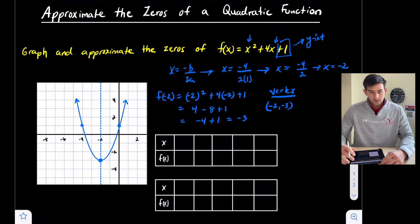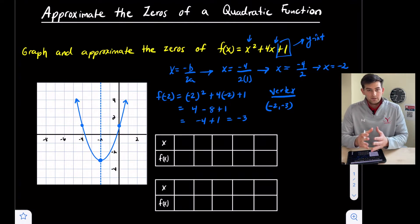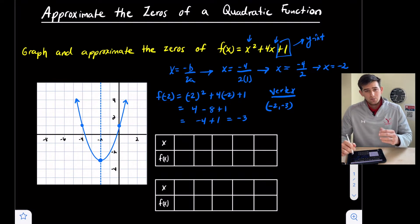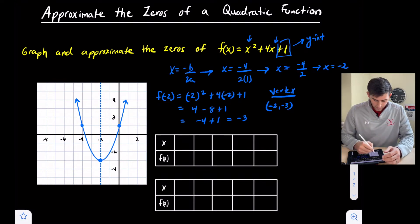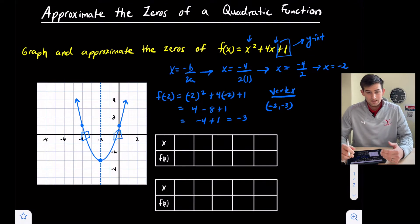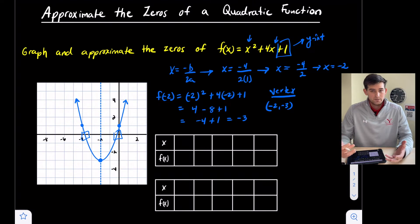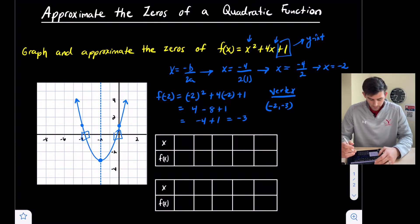Now, as we discussed in a previous video on solving a quadratic by graphing — I'll link that in the cards — what we notice here is that our solutions do not cross the x-axis at a nice whole number or integer. So here's where the approximation comes in. In this example, we're going to approximate to the nearest tenth.